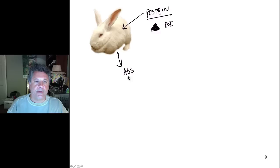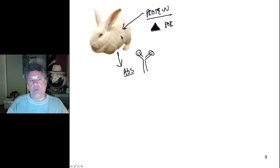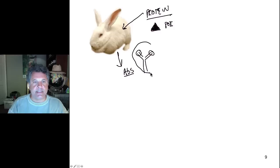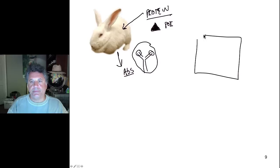We inject the protein into the rabbit and the rabbit will eventually produce antibodies, abbreviated as ABs. Antibodies are Y-shaped molecules that have several subunits, and the tips of these antibodies are specific for the protein of interest - they will bind that protein. The immune system recognizes this protein as a foreign invader, mounts an antibody response to that foreign invader, and produces lots of antibodies that will bind that protein.